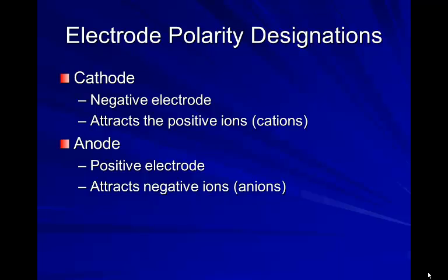Electropolarity designations: you have the cathode, which is a negative electrode — this attracts the positive ions, or the cations. Then you have the anode, the positive electrode, which attracts the negative ions.